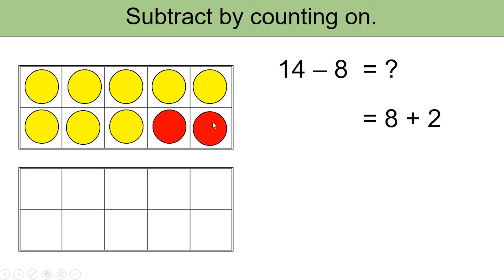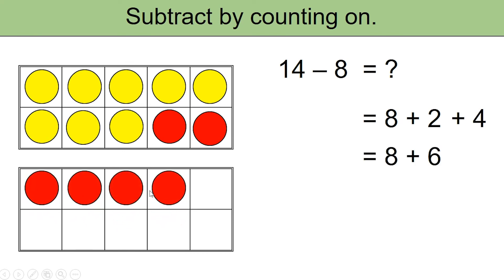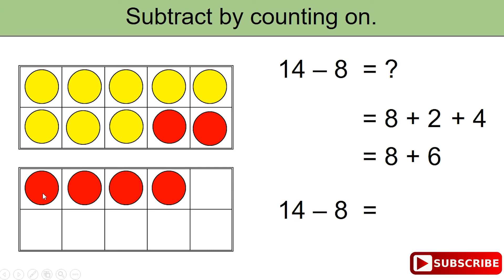We have 8 plus 2 — the first tens frame is complete, which is 10. We need to reach 14, so let's keep adding: 10, 11, 12, 13, 14. Now you can see 8 yellow counters plus 6 red counters equal 14, which means 14 minus 8 is 1, 2, 3, 4, 5, 6 — which is 6.